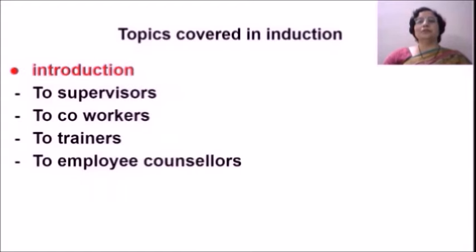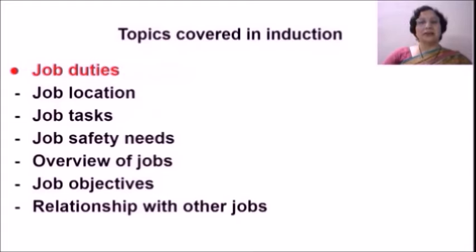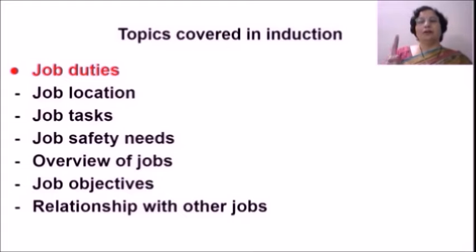In the second part of content, employees are introduced to the people around them — their supervisors, co-workers, trainers, and sometimes employee counselors. Then comes very important information about employee benefits: pay scale, vacations, holidays, rest pauses, training avenues, counseling, insurance, medical and retirement benefits. After that, employees are told about their job duties — job location, job tasks, and job safety needs. For example, if they work on a machine, all safety measures must be made clear from the beginning, as induction is the best time to share this information.